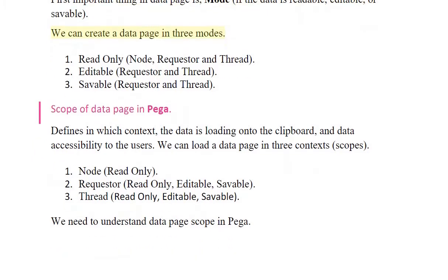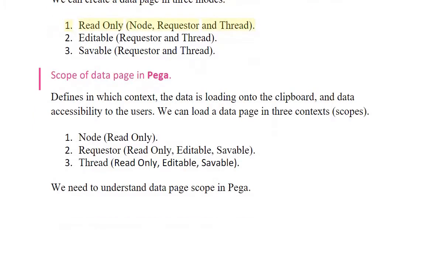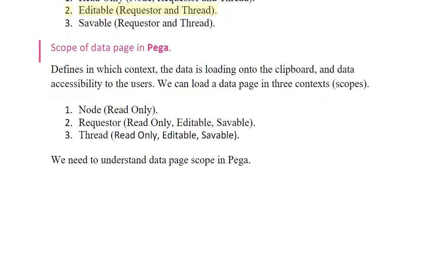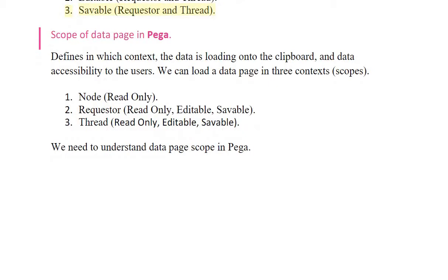We can create a data page in three modes. One: read only — node, requester, and thread. Two: editable — requester and thread. Three: saveable — requester and thread.